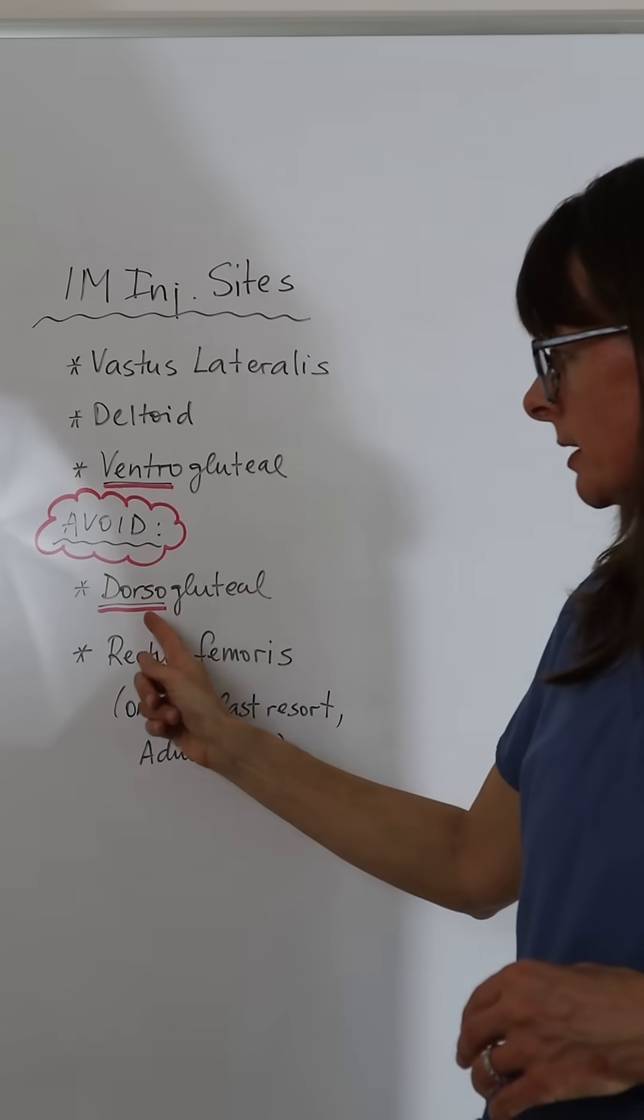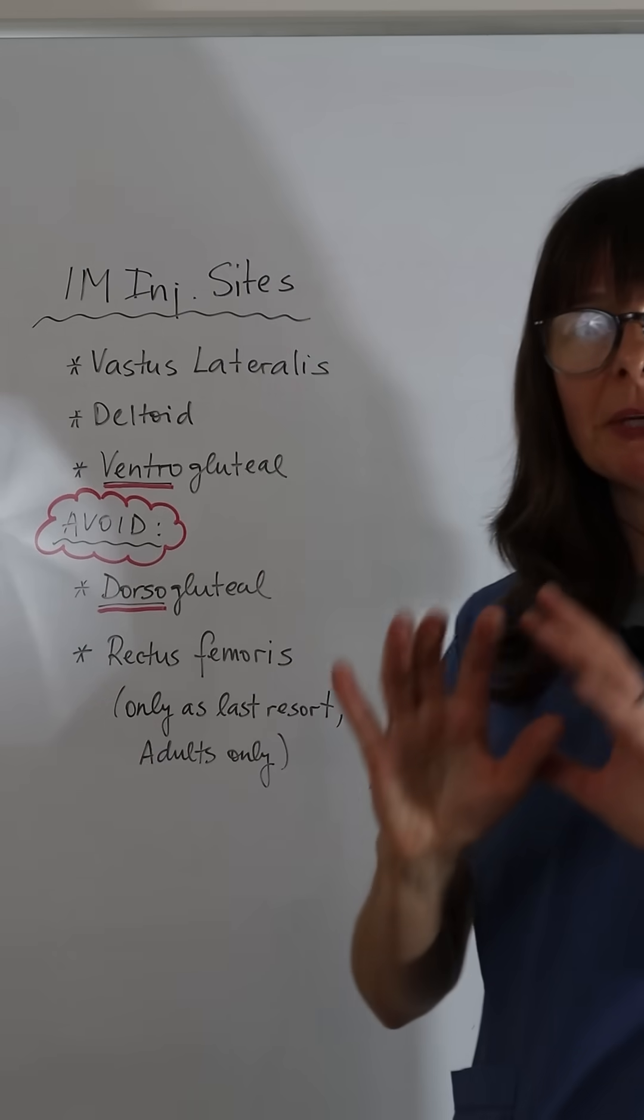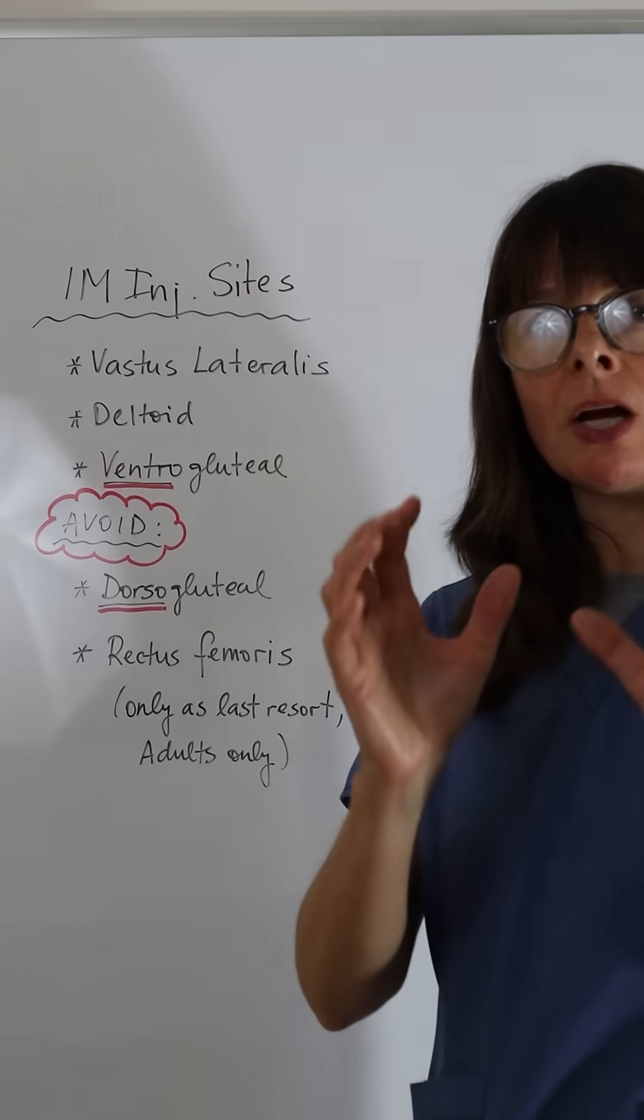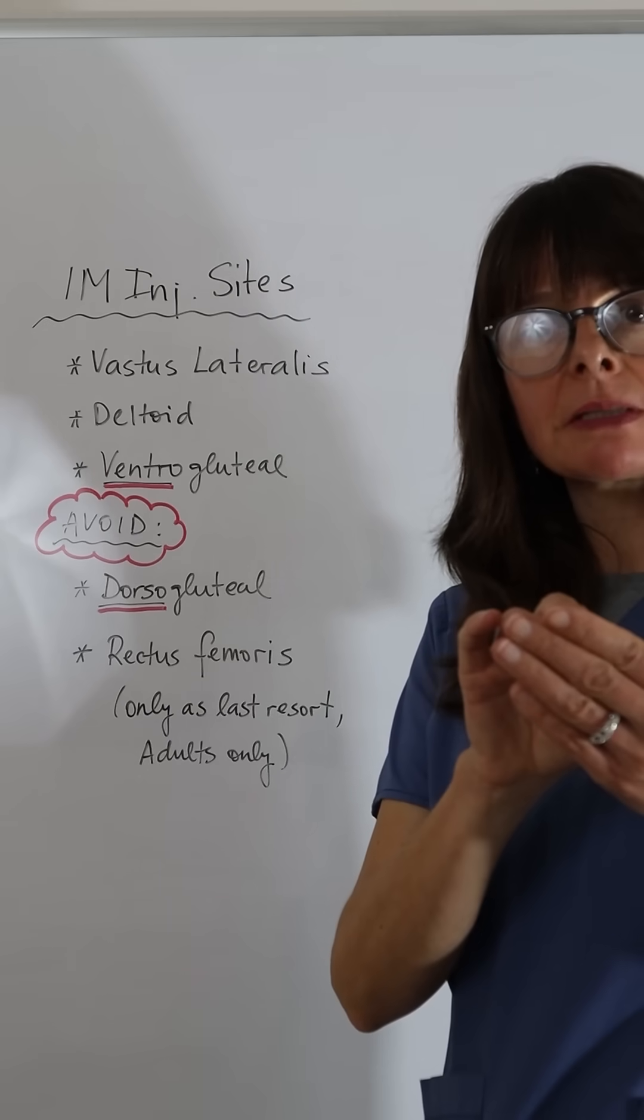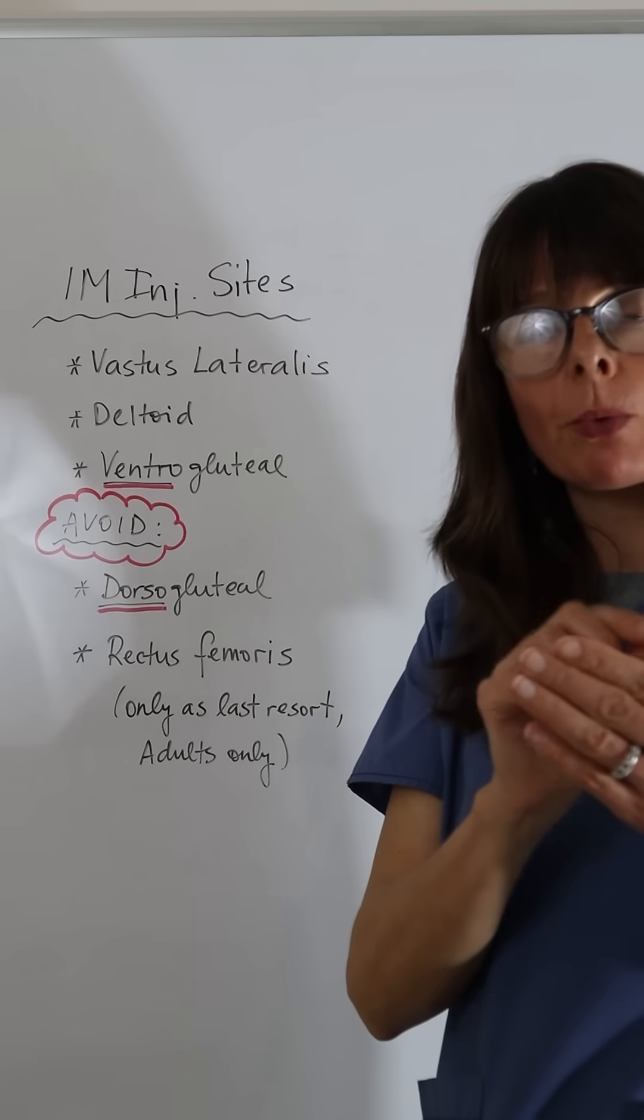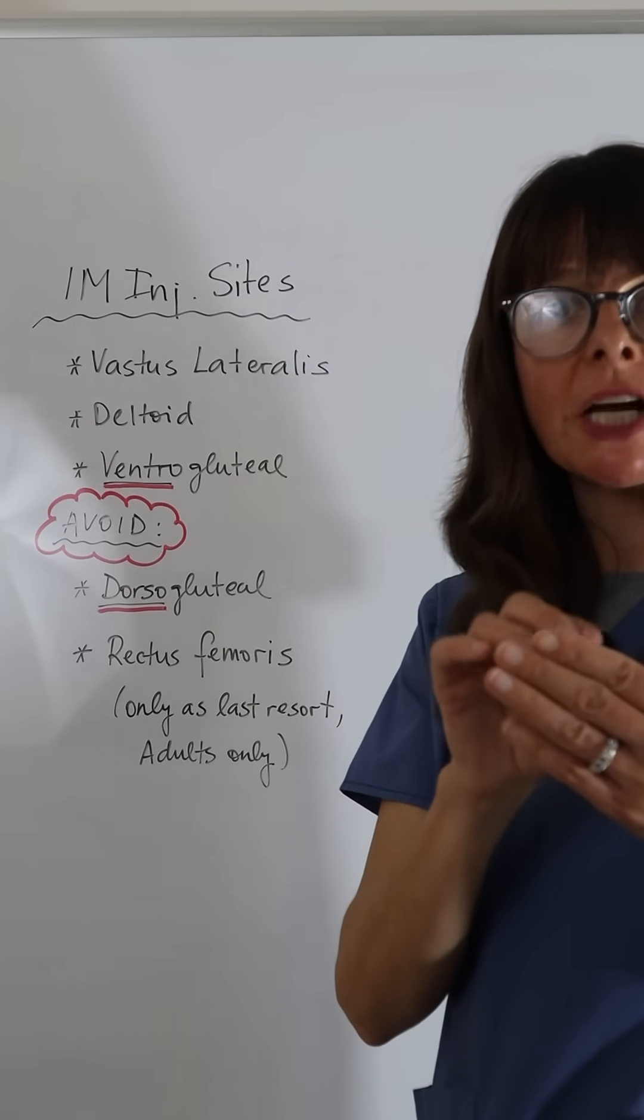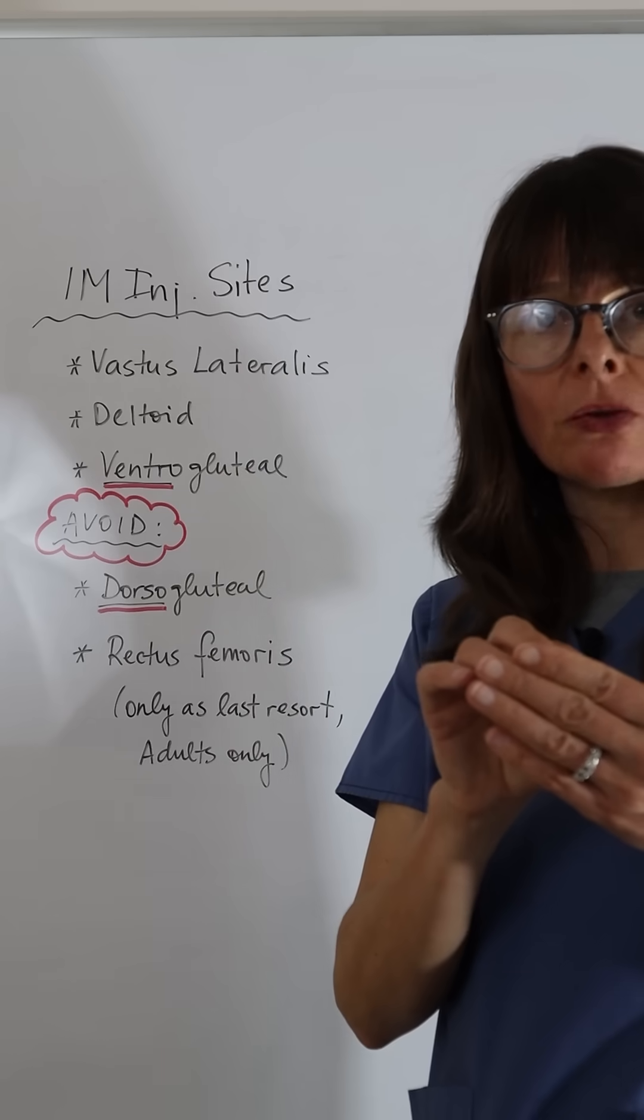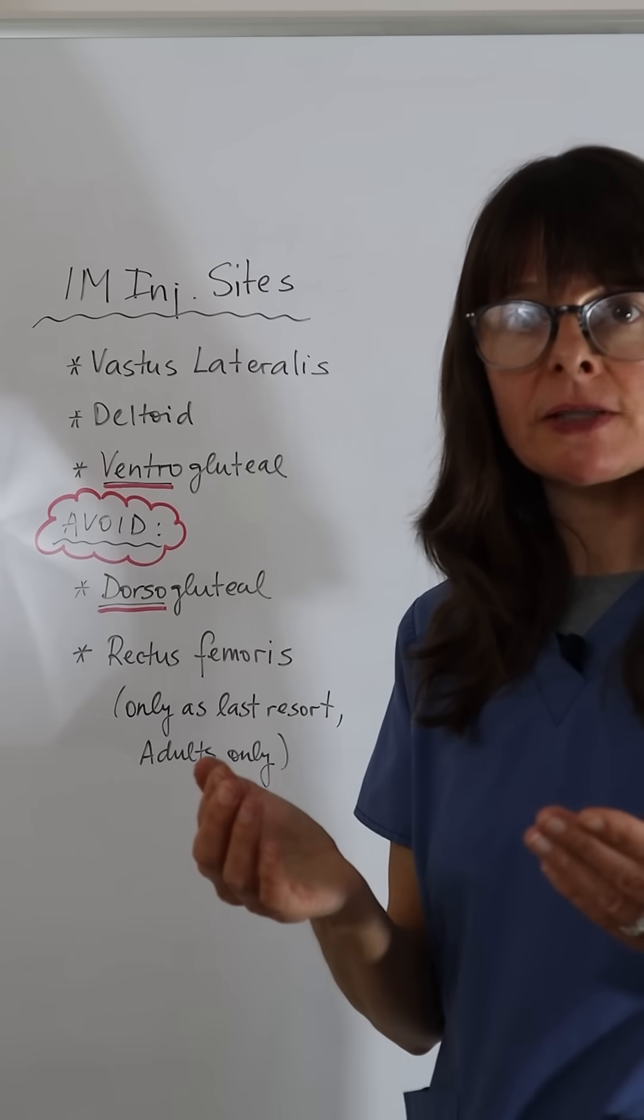We want to avoid the dorsogluteal sites because the back of the buttock, if we would be injecting the gluteus medius from the back, the sciatic nerve is right there, and we want to avoid injecting or touching that nerve with our needle to make sure we're not causing any damage.